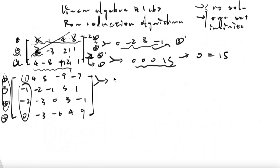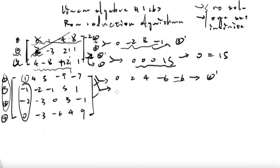Add the first equation and the second equation together, and the result will be 0, 2, 4, negative 6, and negative 6. This is just the constant value. This will be our new second equation. And let's add two times the first equation plus the third equation together. The result will be 0, 5, 10, negative 15, and negative 15.